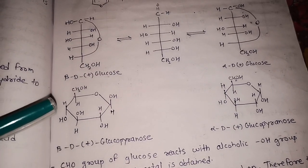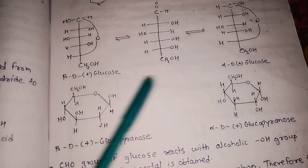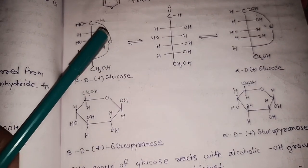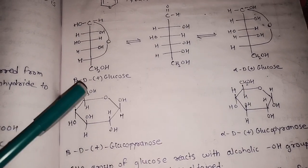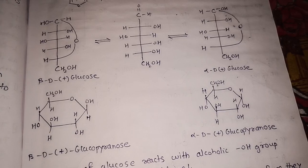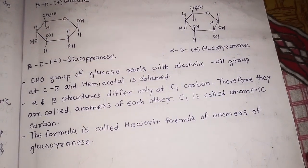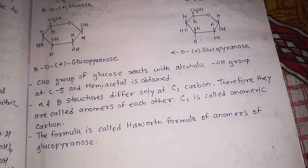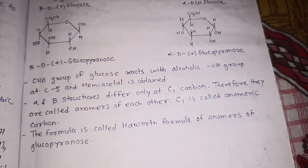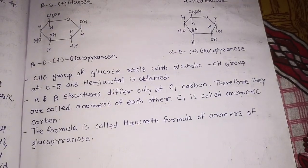There is no difference between alpha-D and beta-D-glucopyranose except at C1, which is called the anomeric carbon. Alpha and beta structures differ only at C1, so they are called anomers of each other. The CHO group of glucose reacts with the alcoholic OH group at C5 to give a hemiacetal. This formula is called the Howarth formula of the anomers of glucopyranose.